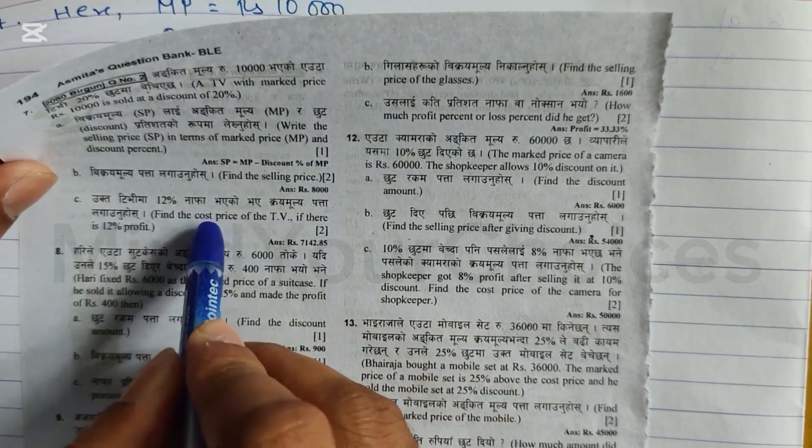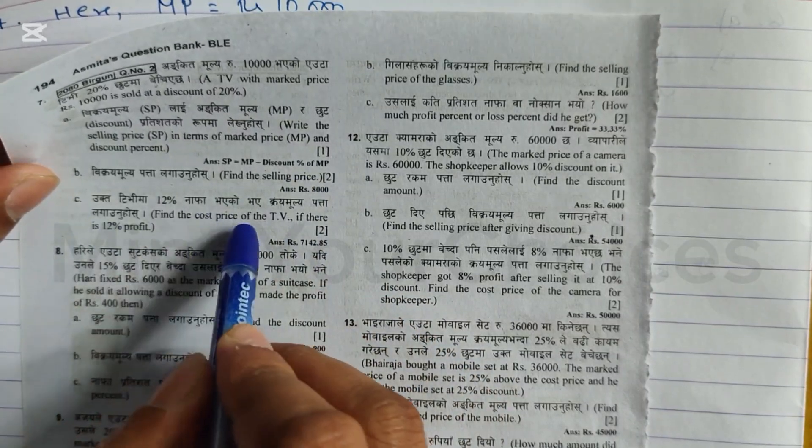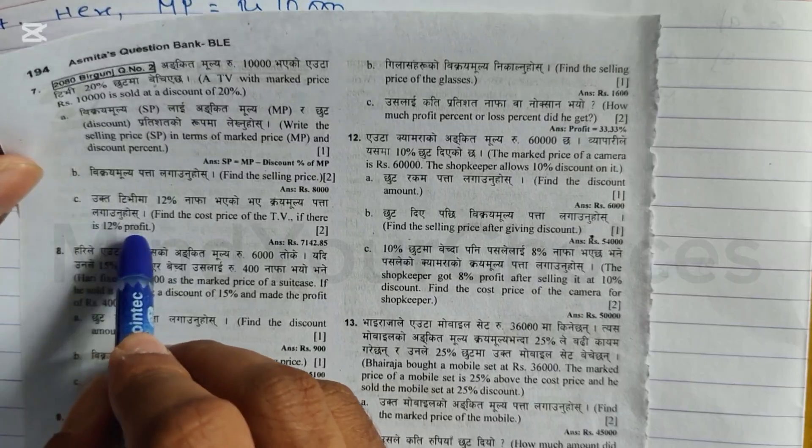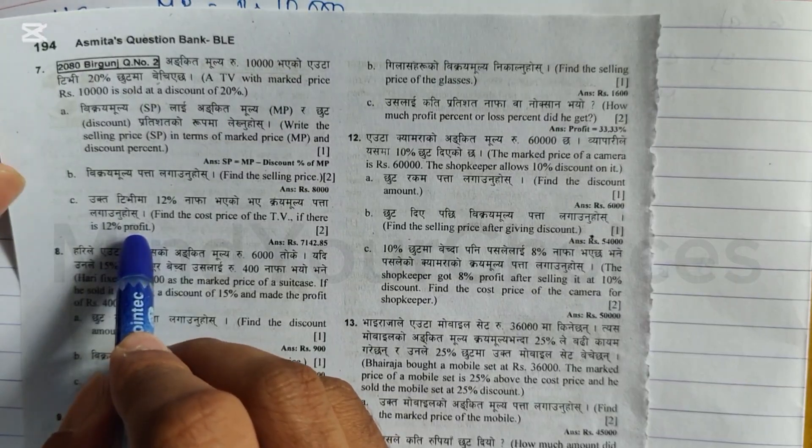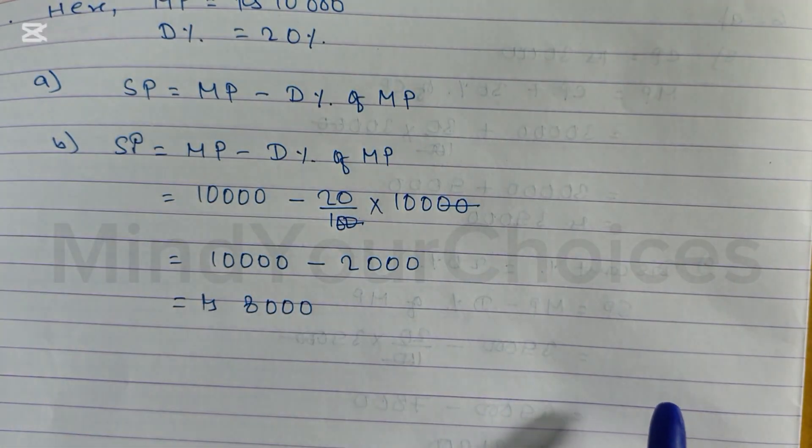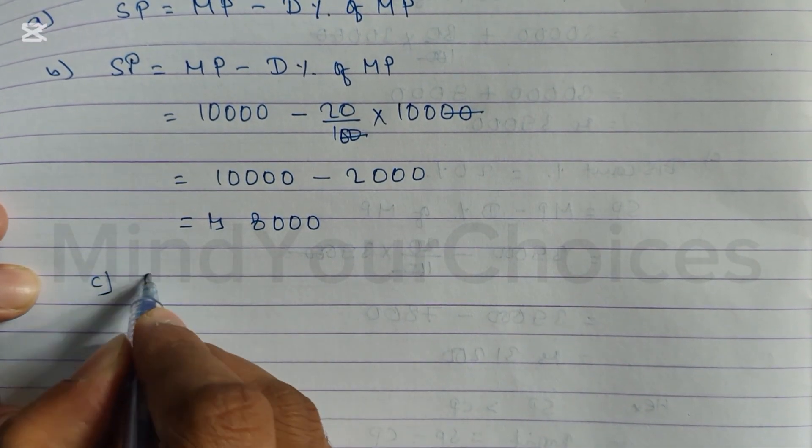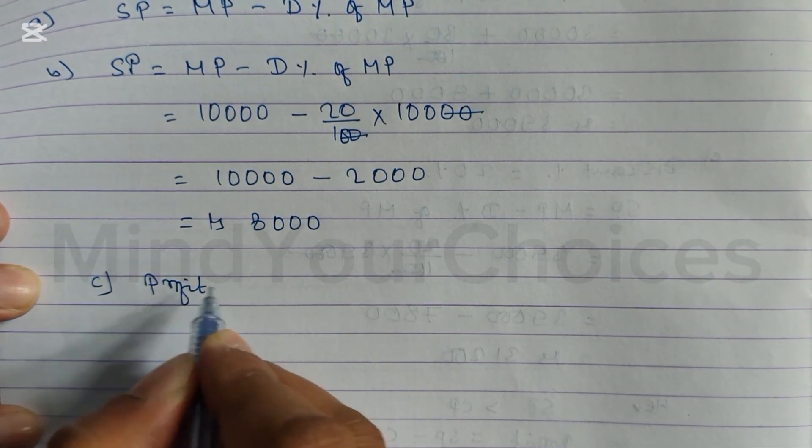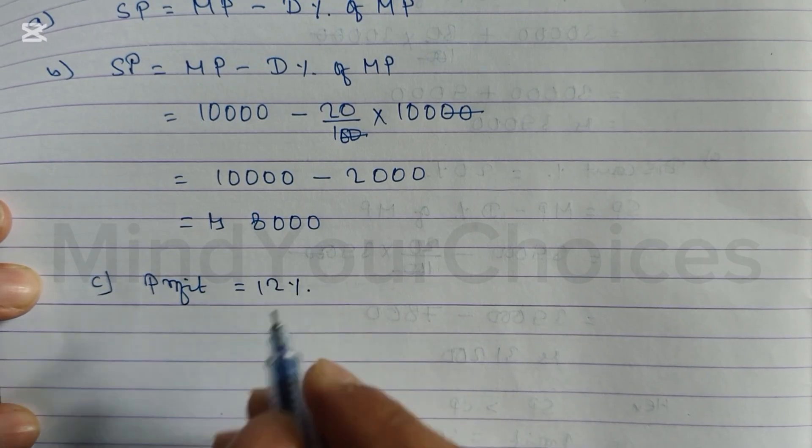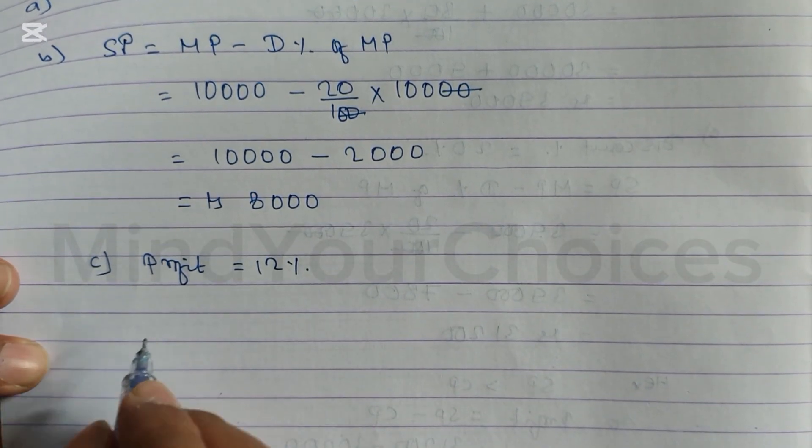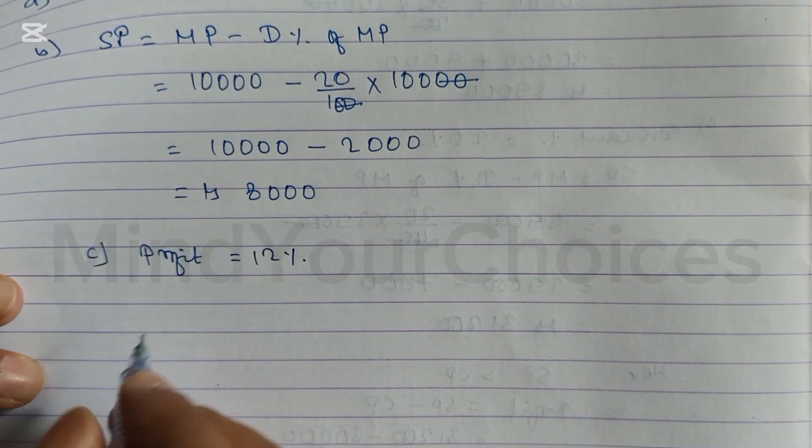Number C: find the cost price of the TV if there is 12% profit. Now with 12% profit, what is the cost price? We need to find it. Number C: profit equals 12%, we have to find out cost price CP.